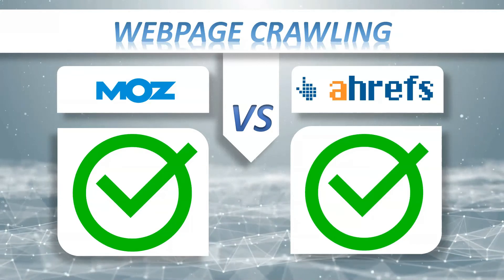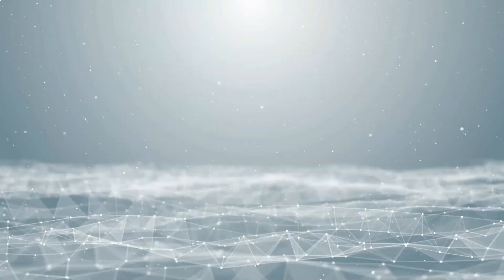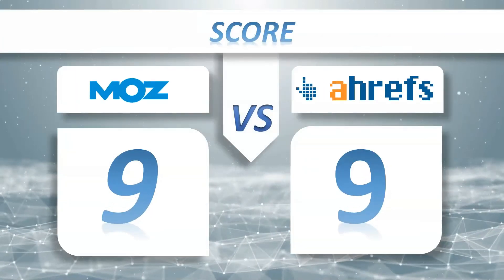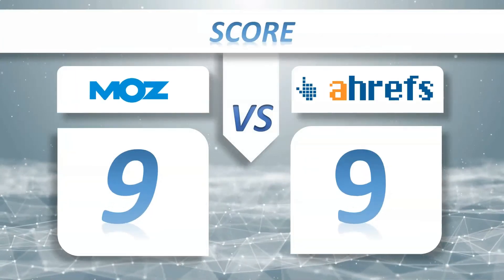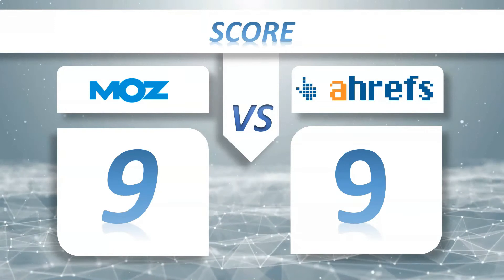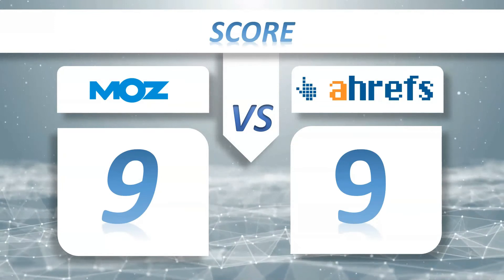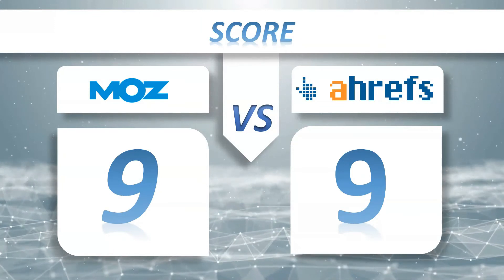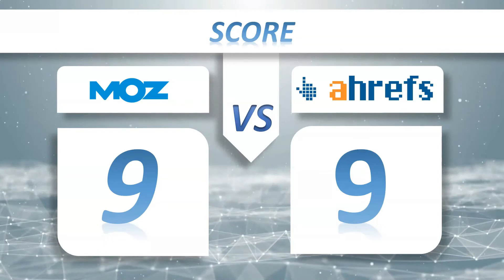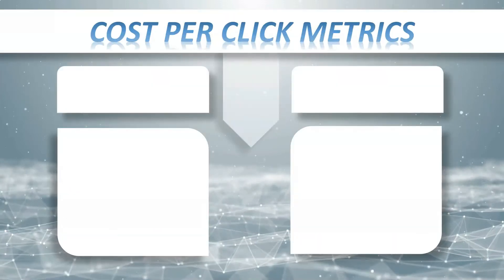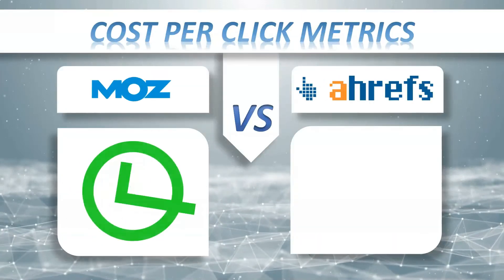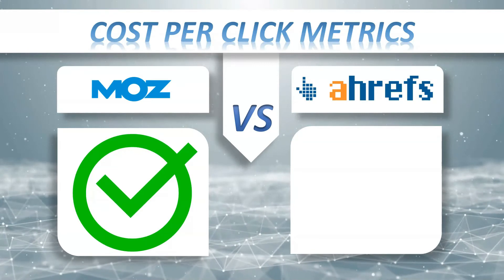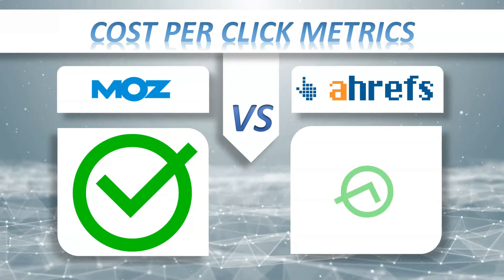So the score for now is Moz Pro 9, Ahrefs 9. Cost Per Click Metrics: Moz Pro — yes, Ahrefs — yes.